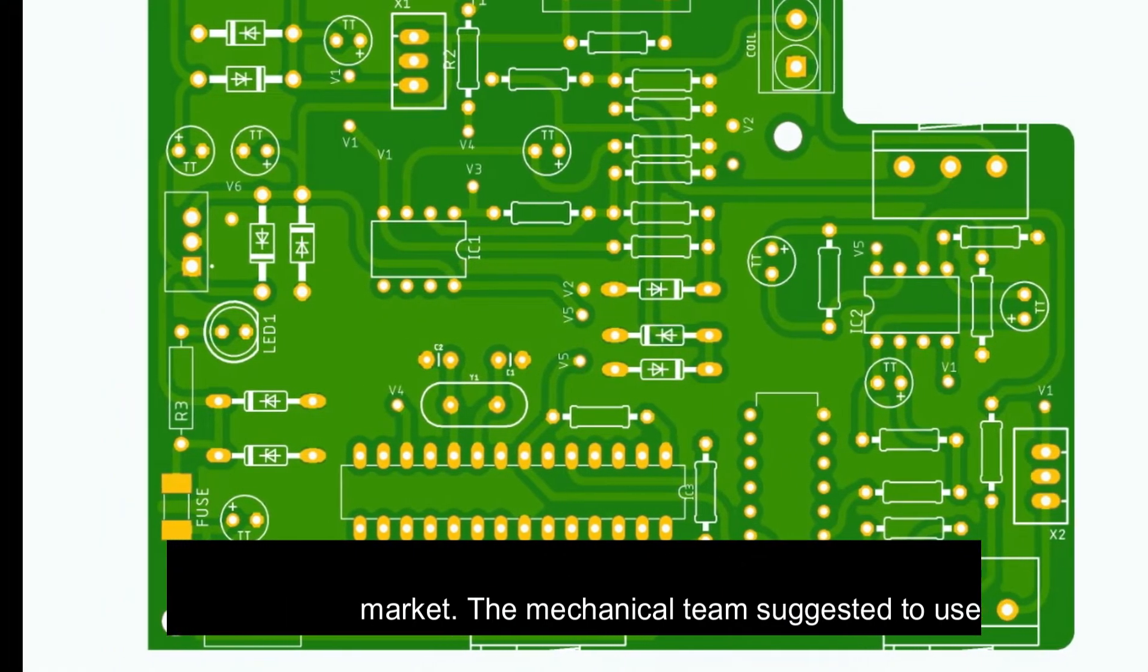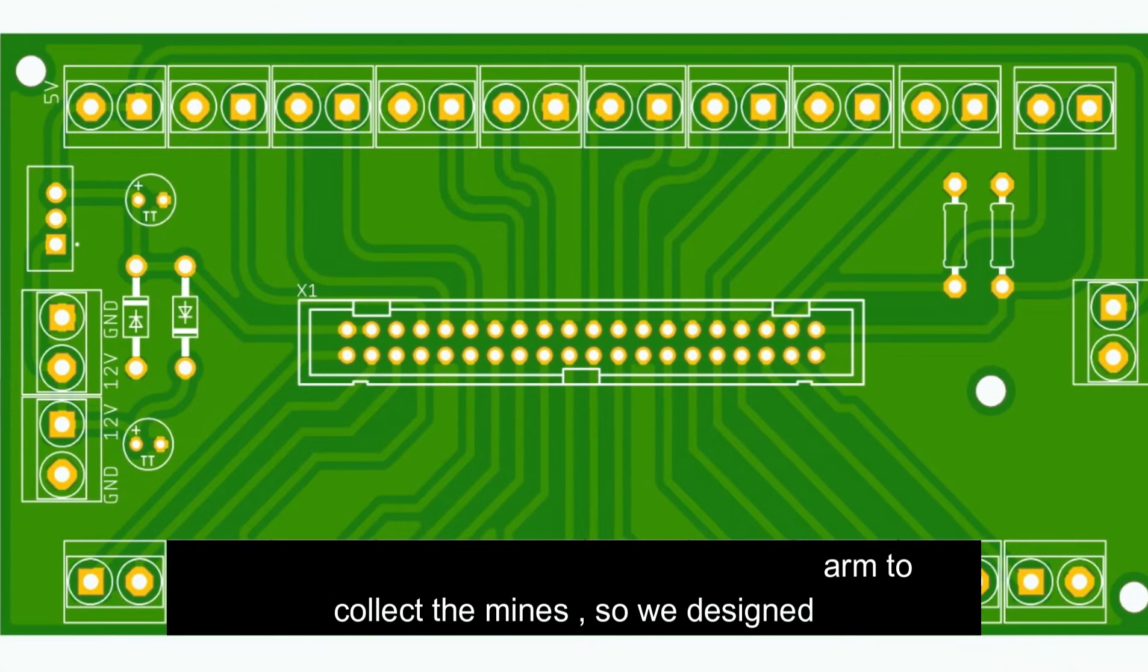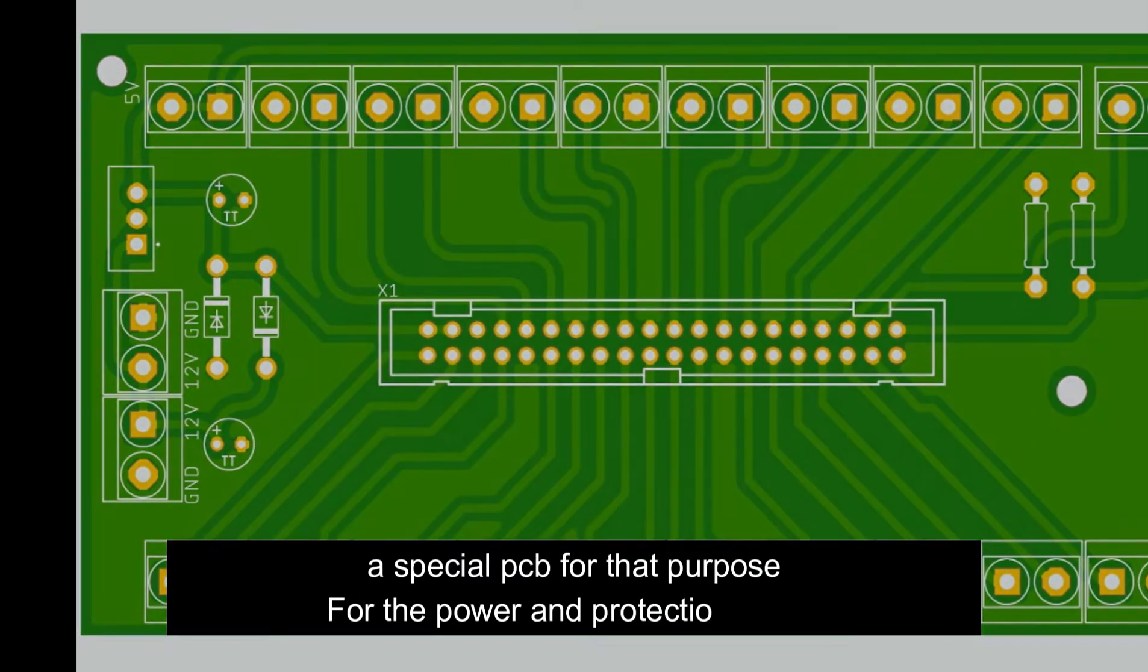The mechanical team suggested to use an electromagnet instead of the traditional arm in order to collect the mine. So we designed a special PCB for this purpose.